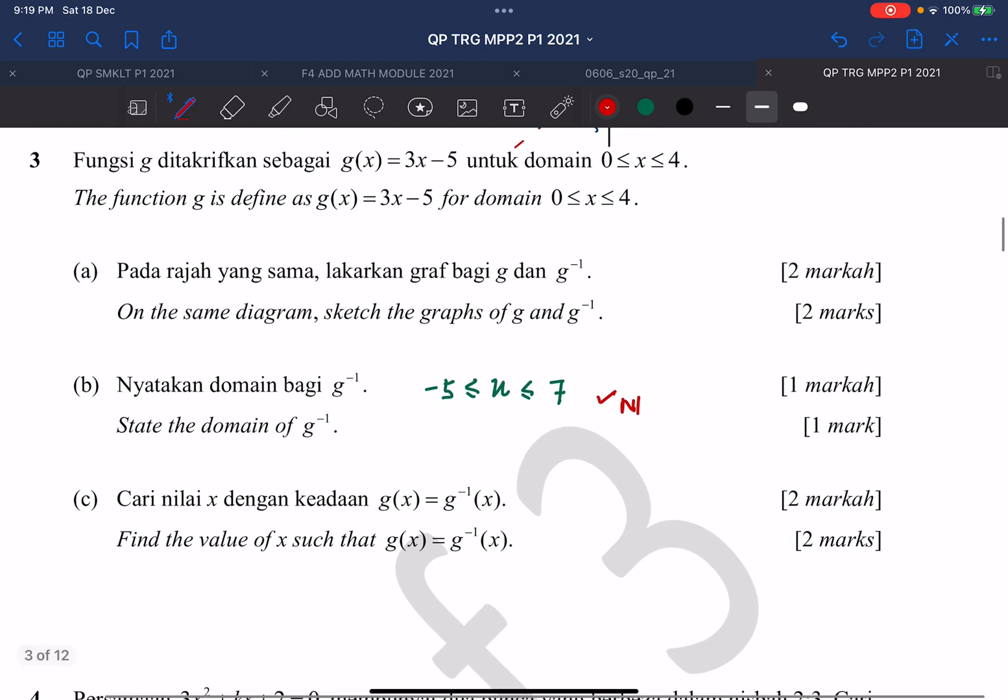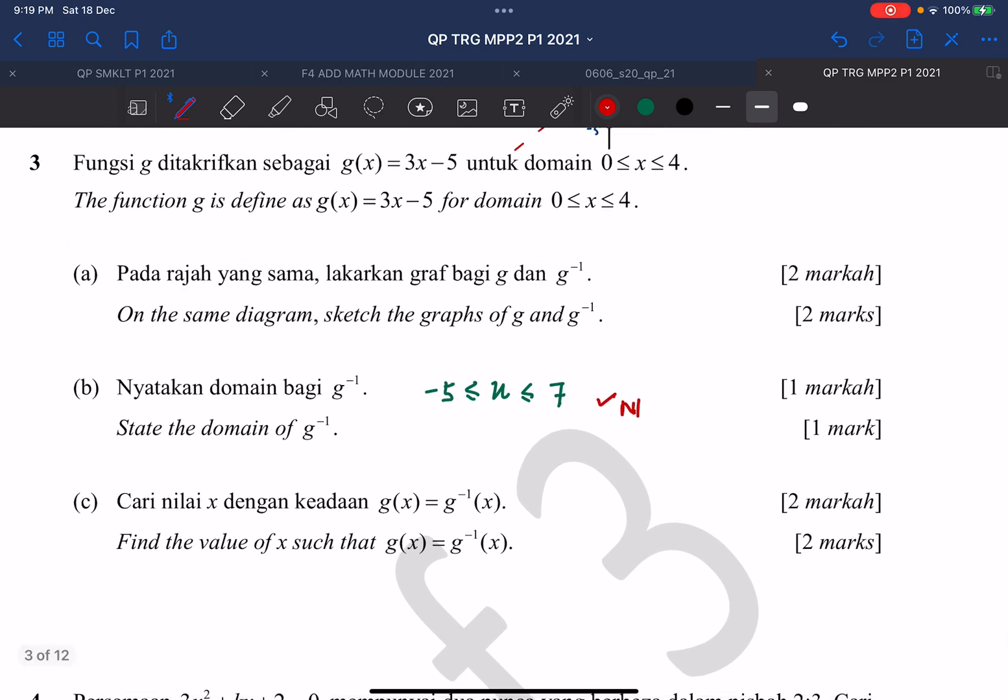And for the last question C, they ask us to find the value of x such that Gx equals to G inverse x. So we need to get the function for G inverse x. So to obtain the G inverse x function, we change the x in the function into y.